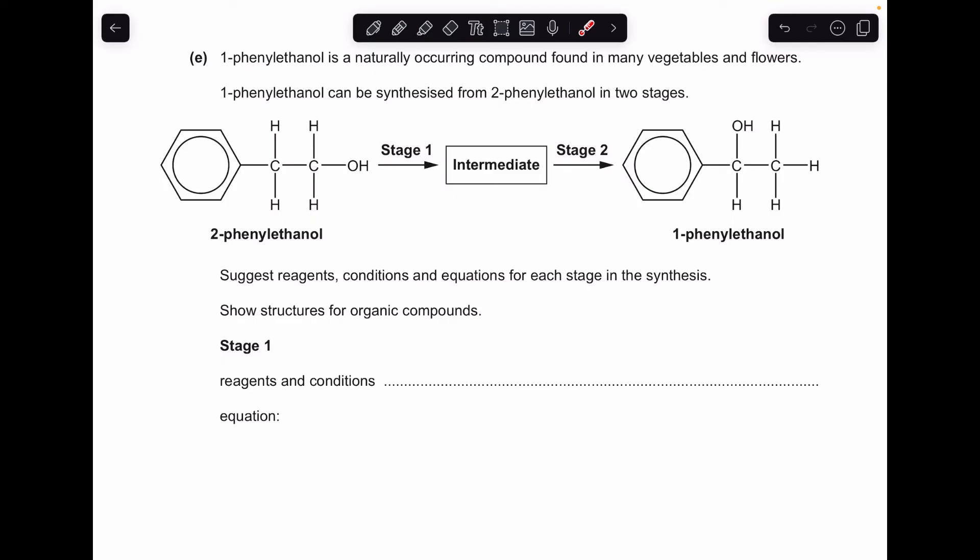Moving on to part E, basically what they've done in this synthesis is they've taken the OH group off there and stuck it on the other carbon, so we need to go via this intermediate which is going to need to be an alkene. How do we turn an alcohol into an alkene? We dehydrate it, we take the water out and we use a concentrated acid to do that, and you can either go for sulphuric acid or phosphoric acid. There's that written up there and the equation underneath.